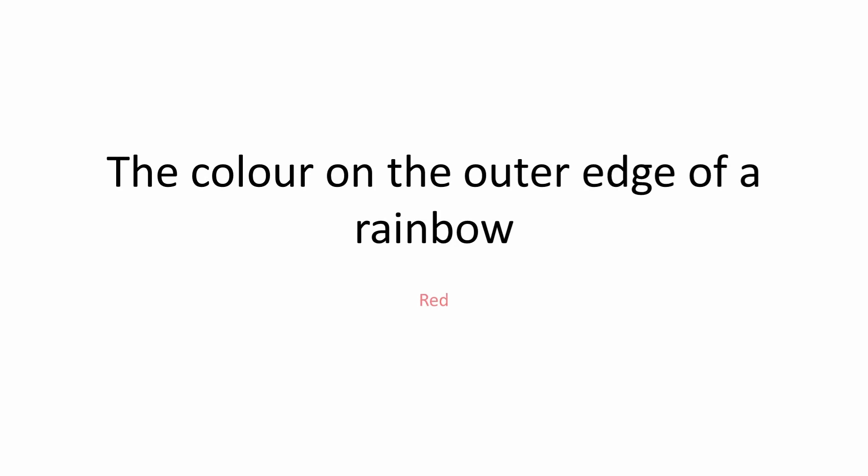The color on the outer edge of the rainbow is red. The color on the inner edge of the rainbow is violet. The second color is orange. The outer edge color is red.